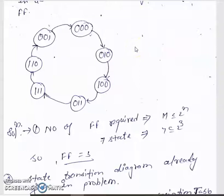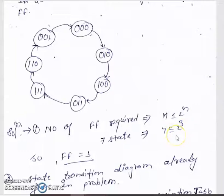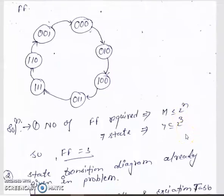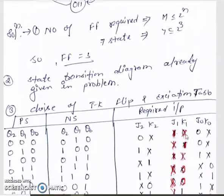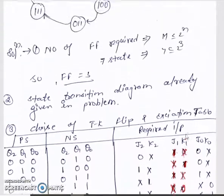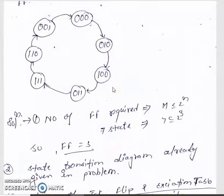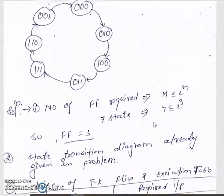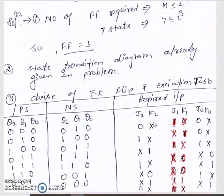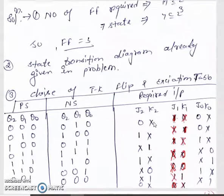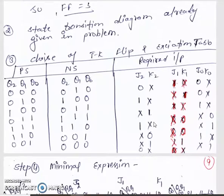Since the mod is 7, we find n from 7 ≤ 2^n. Since 2^3 = 8 ≥ 7, we choose n = 3 flip-flops. The state transition diagram is already given in this problem, so we need not draw it. We choose the JK flip-flop and write the excitation table of the counter with present state, next state, and inputs J0, K0, J1, K1, J2, K2.